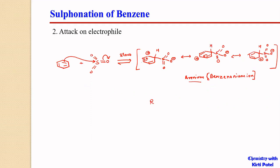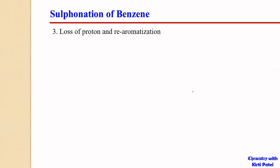The arenium ion is stabilized through resonance, so it is a relatively stable structure. Once formed, it can either revert back to benzene and sulfur trioxide, or move forward to form the products.